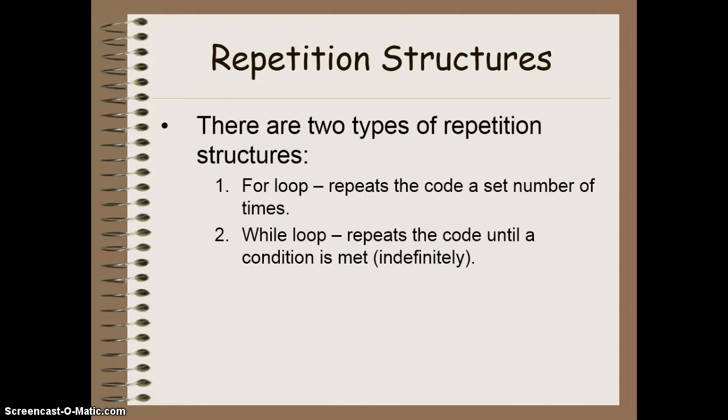We have two types of repetition structures we're going to look at. The first is a for loop, which is a counted loop. It basically repeats the code a specific number of times. And the second is a while loop, or also known as a conditional loop, which repeats code conditionally until some sort of specific initial condition is met. And this can often run indefinitely, especially if you do a while true loop.